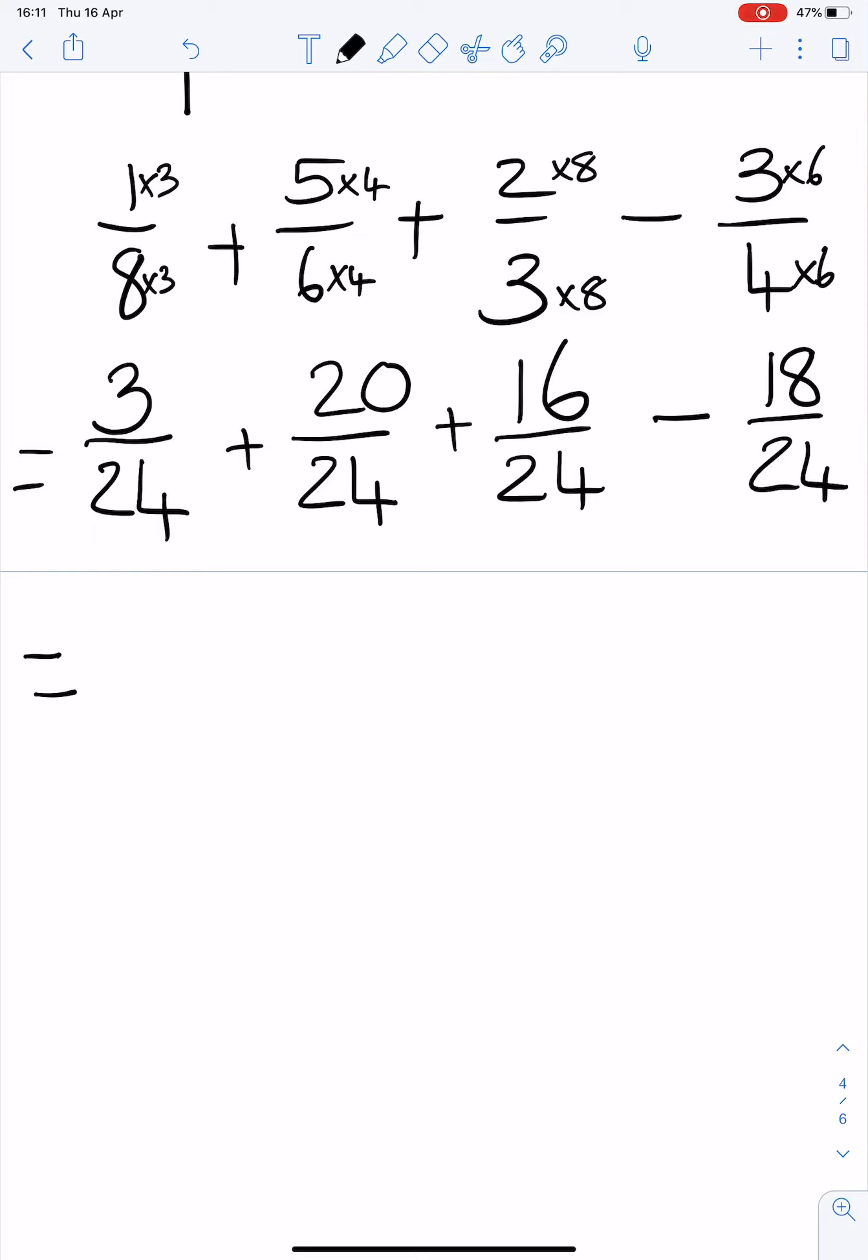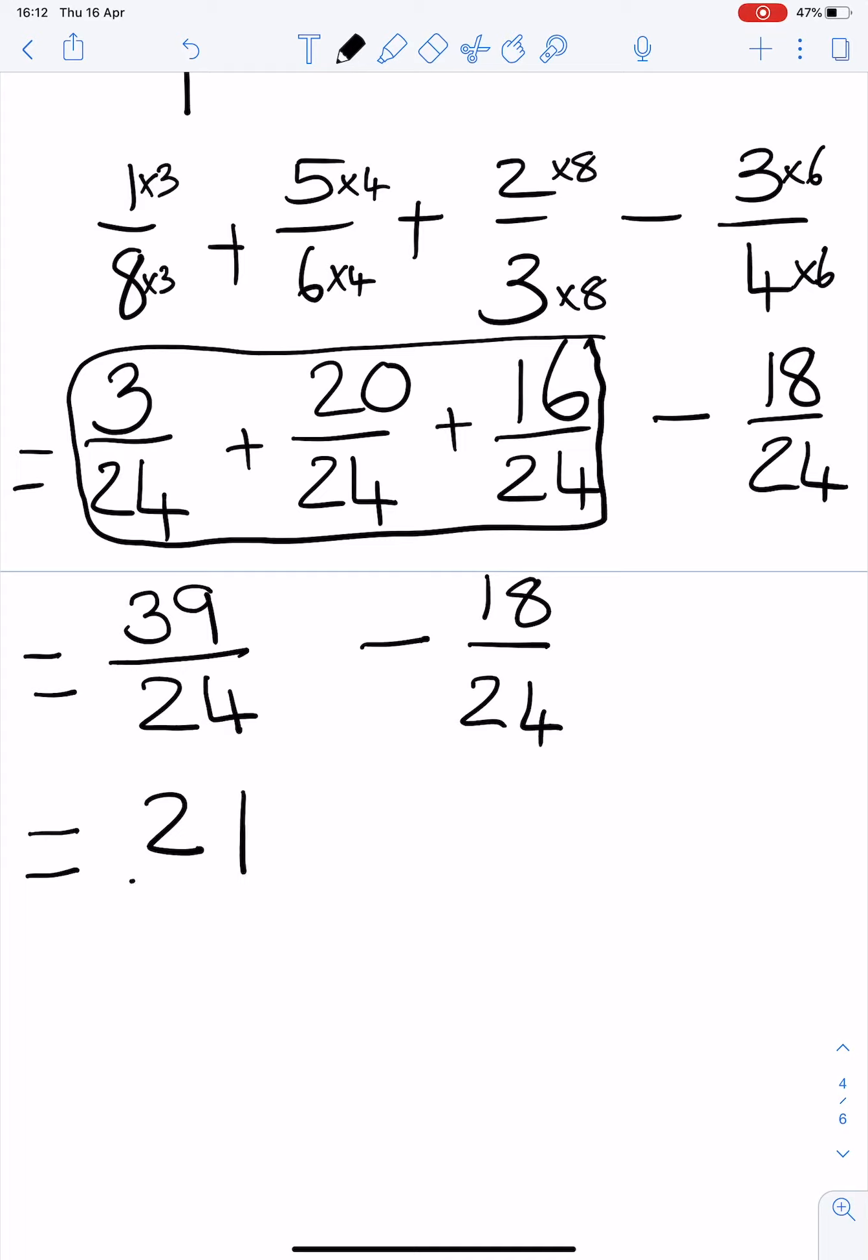3 plus 20 is 23, plus 16 is 39. You'll notice that I added all of those together. Now I need to subtract 18/24. 39 minus 18 is 21 over 24.